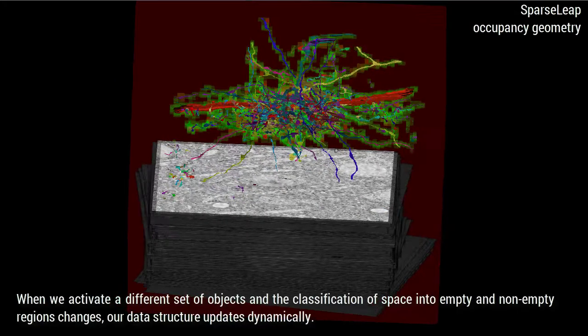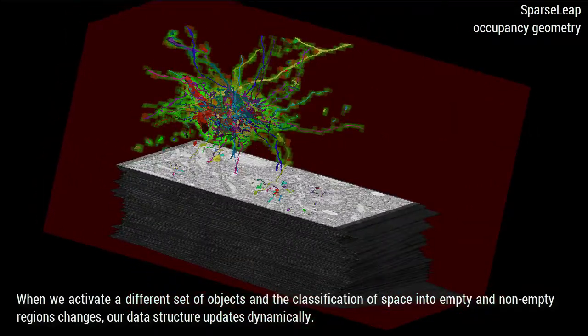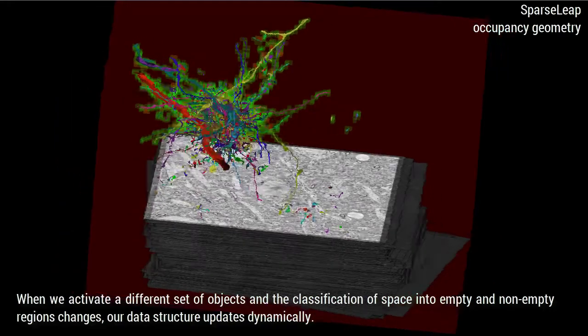SparseLeap supports rapid updates of the empty space skipping data structure by simply rasterizing a different subset of the occupancy geometry.